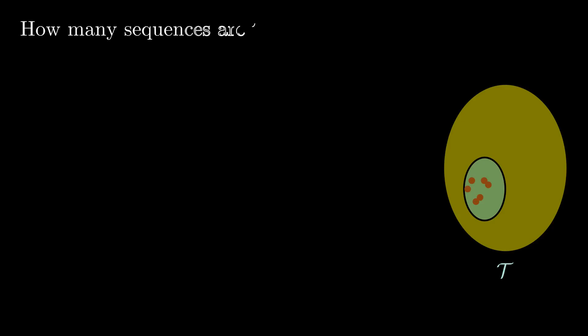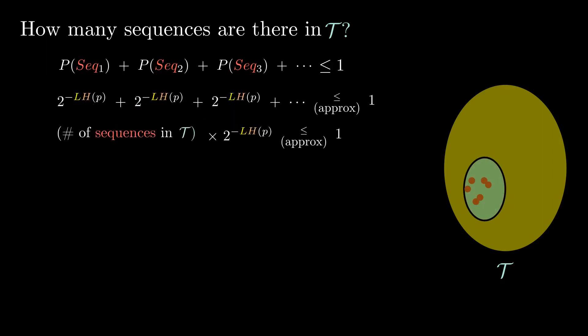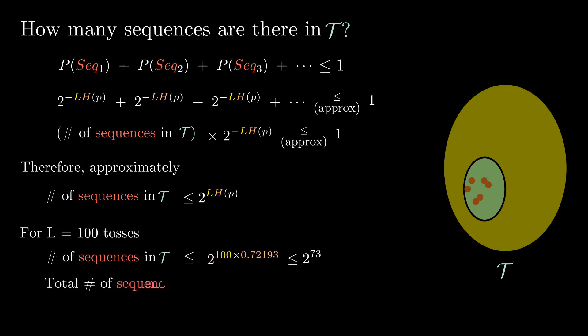Let us look into the typical set T a bit more. How many sequences does T contain? Since the probability of the typical set is at most 1, and it equals the number of sequences in T multiplied by their common probability factor, this yields a bound on the size of T. For a sequence of length 100, there are 2^73 sequences in the typical set, whereas the total number of possible sequences is 2^100, which is a much larger number.